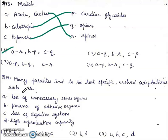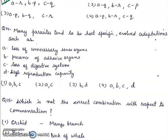Question 14: many parasites tend to be host specific, evolved adaptations such as A, loss of unnecessary sense organs; B, presence of adhesive organs; C, loss of digestive system; D, high reproduction capacity. Right answer will be fourth, A, B, C, D, all of these.